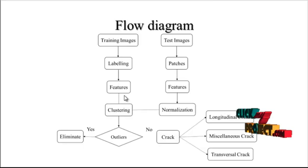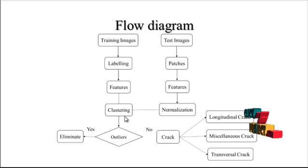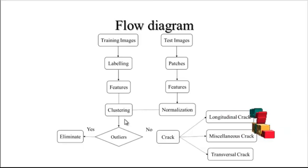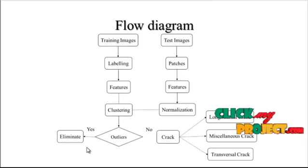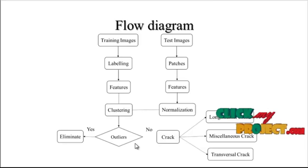After labeling, features are extracted from the corresponding images and then clustering is done to cluster the categories. For example, if there are 3 kinds of outputs, the number of clusters will be 3. Based on that, a decision is made whether to move to an elimination stage or proceed to the testing stage.